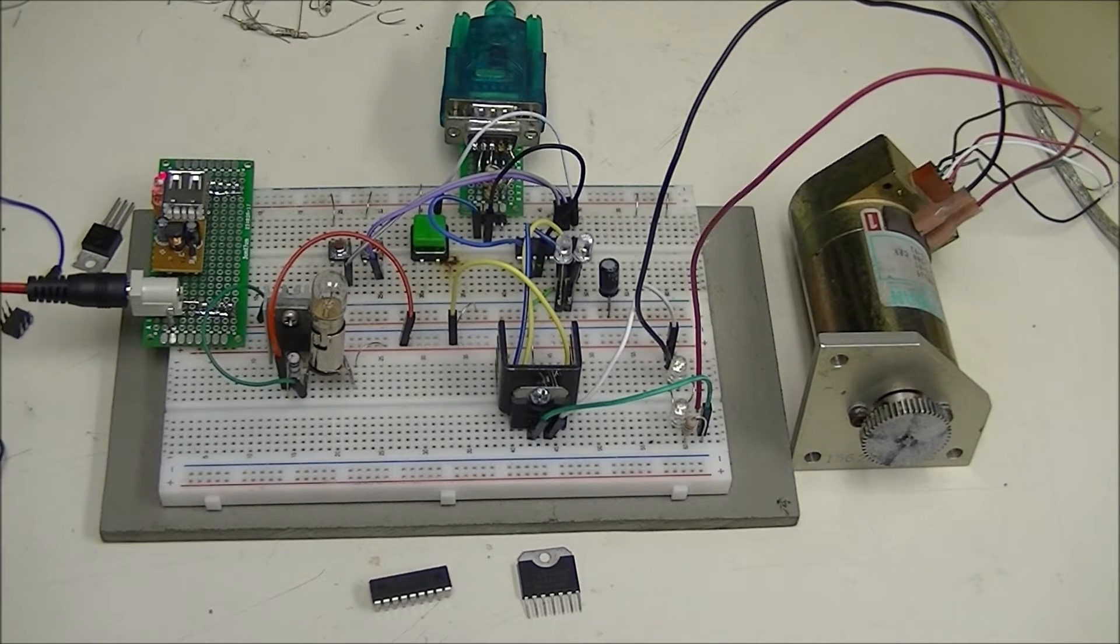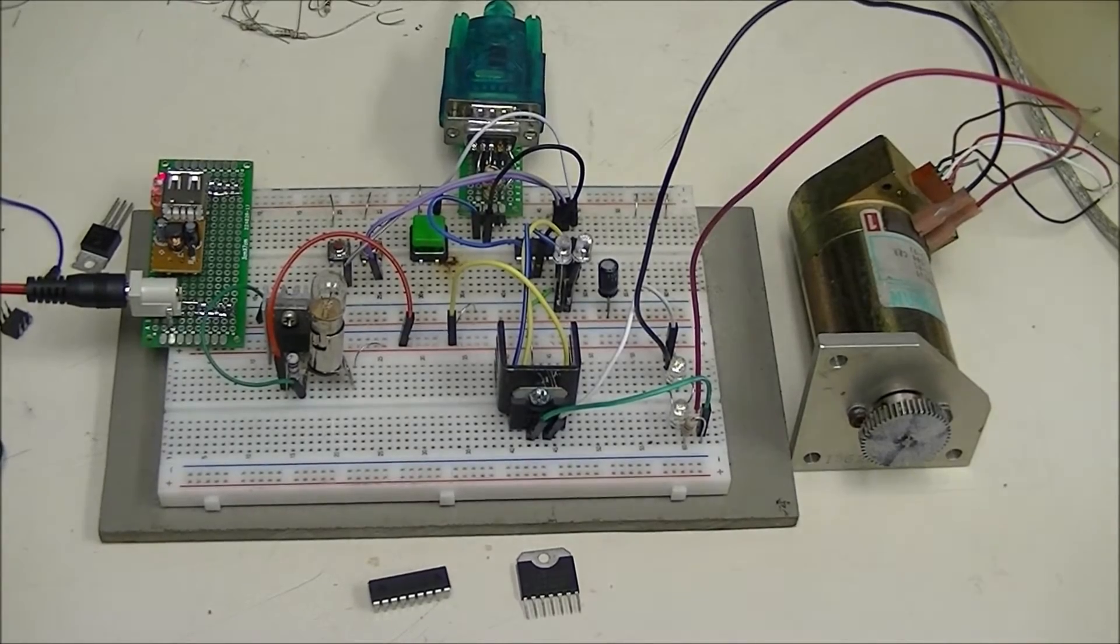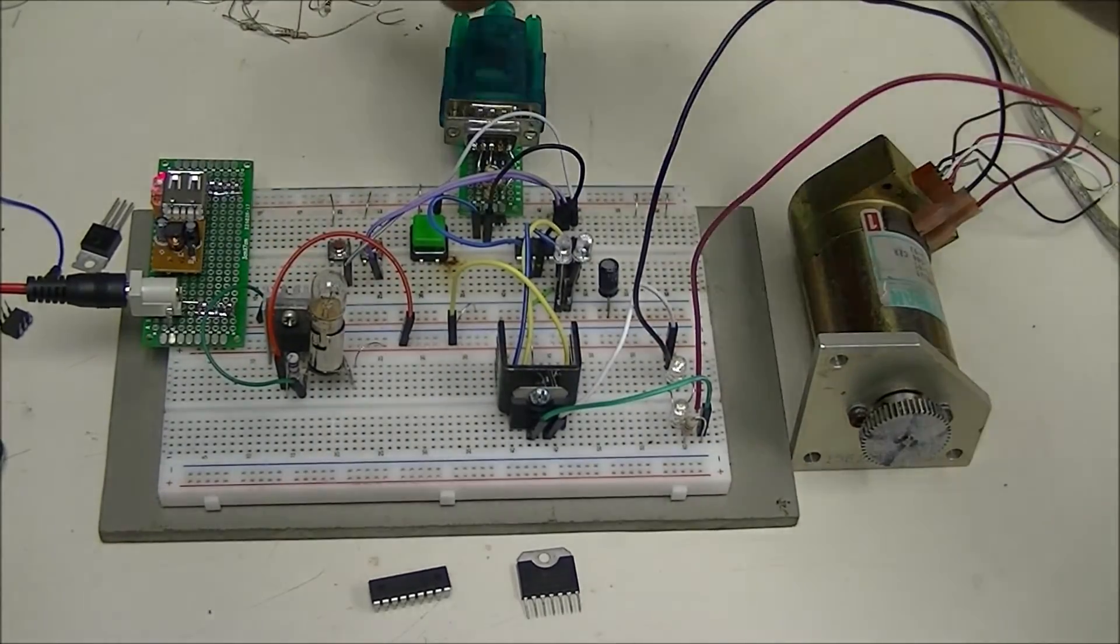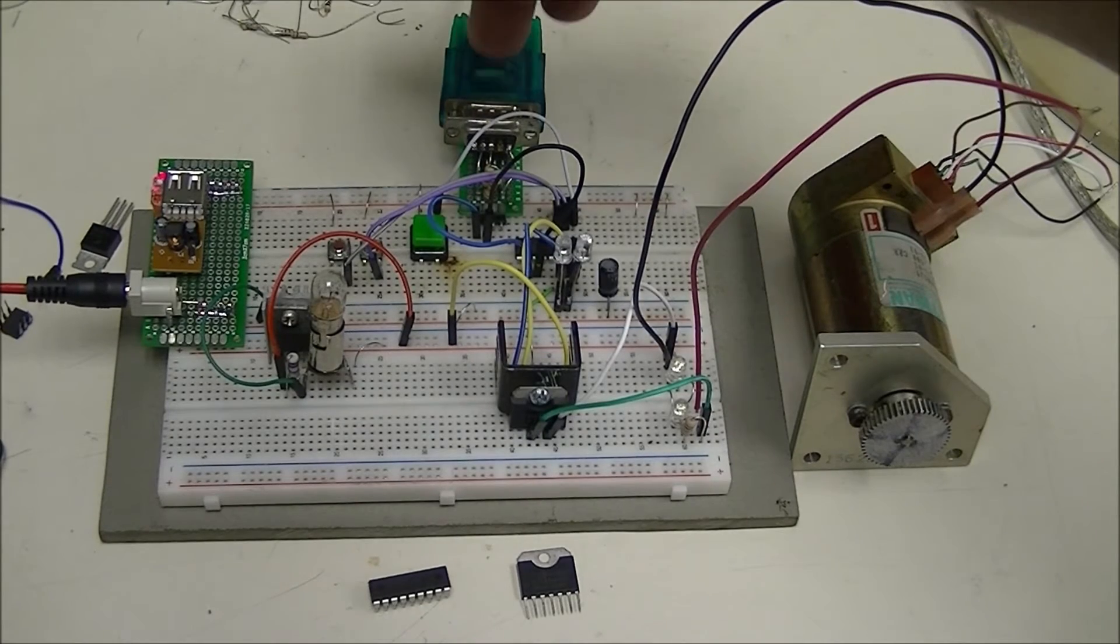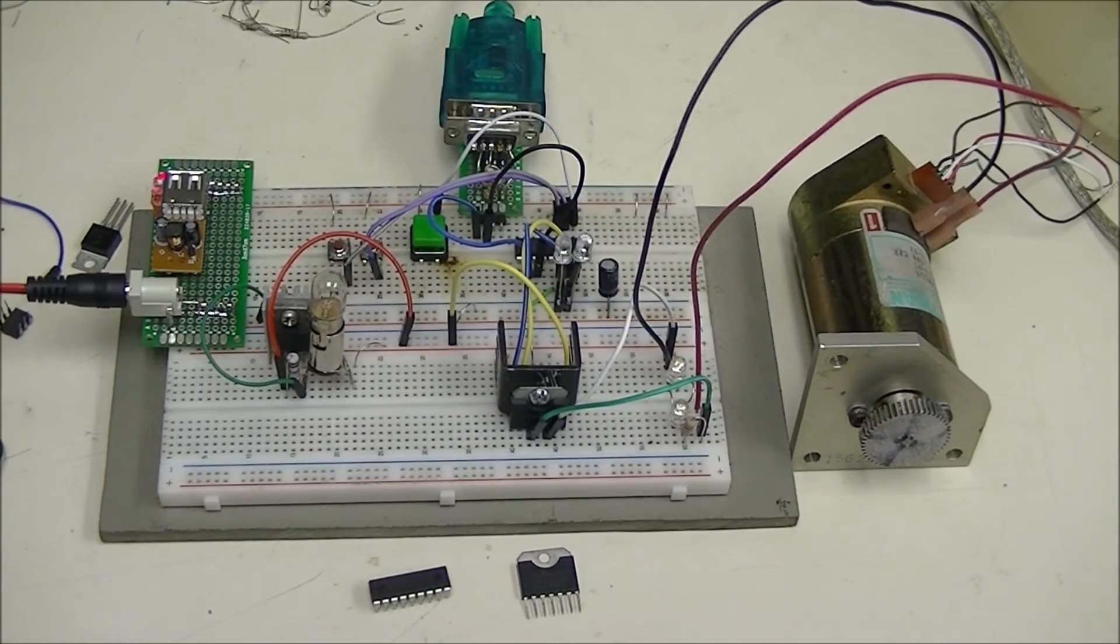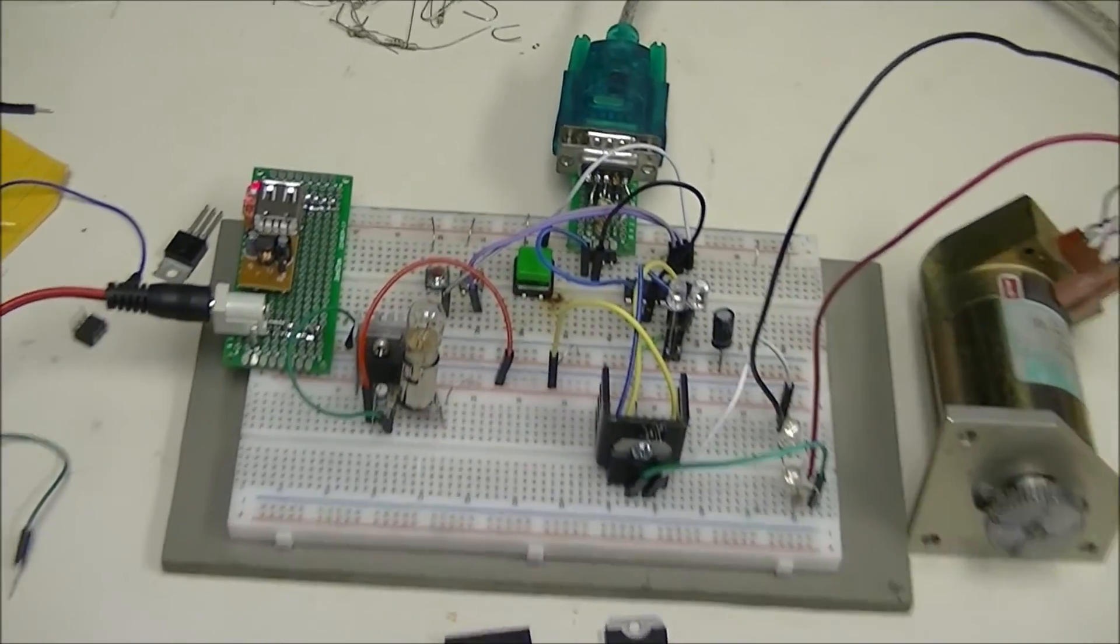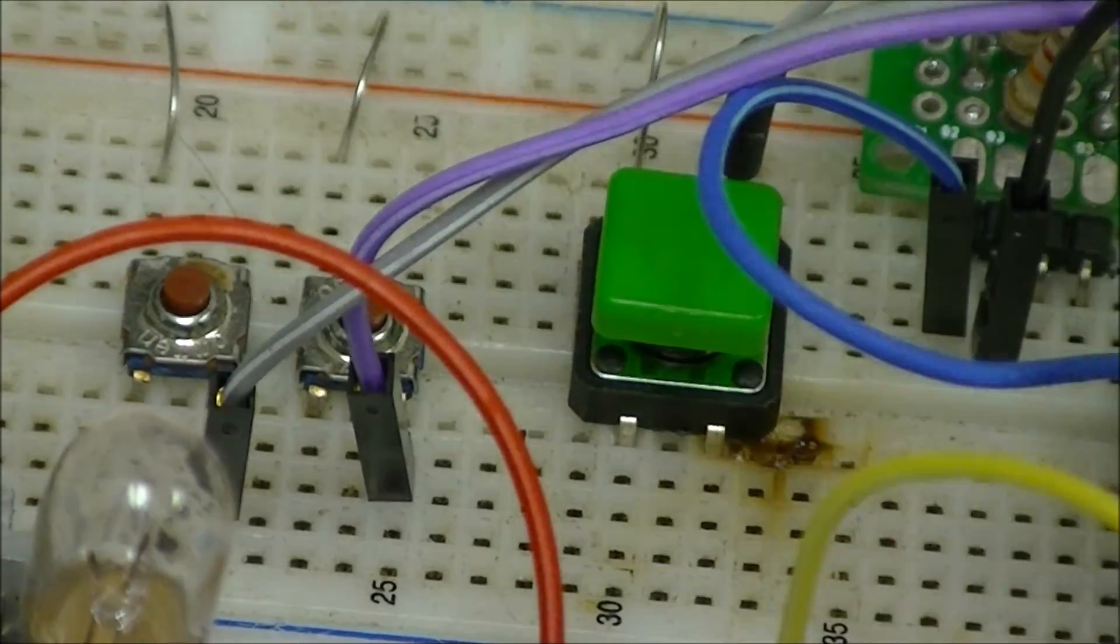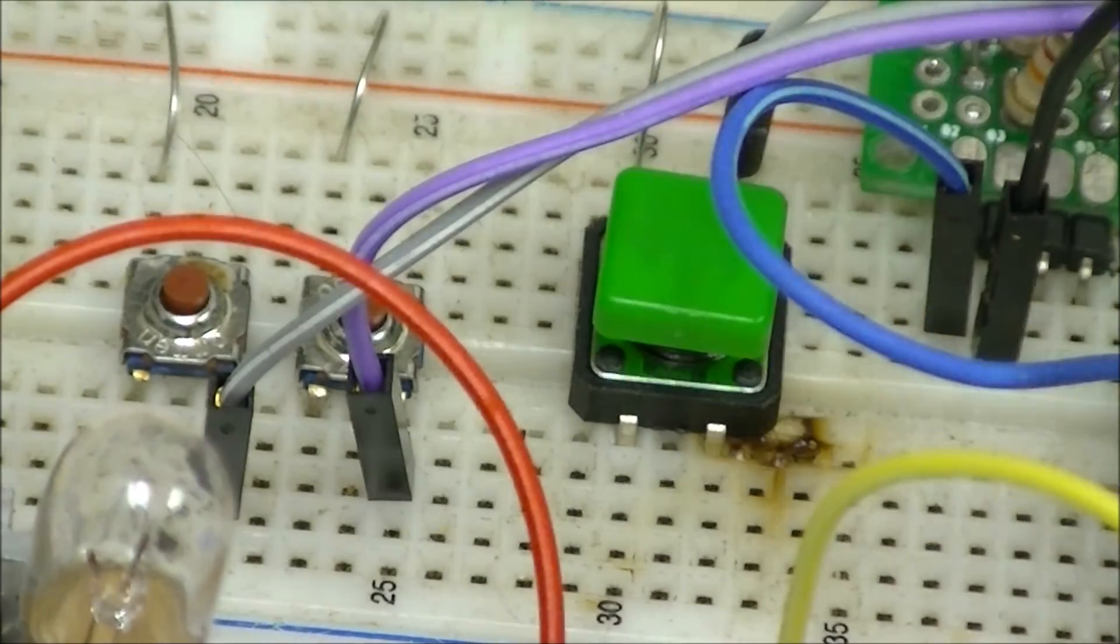We have a little more sophisticated programming in this. Let's take a look real quick. Here's my power distribution bus. This is an RS-232 connection to program the PICAxe. Let's zoom in just a bit. There are your three switches: forward, reverse, and stop.